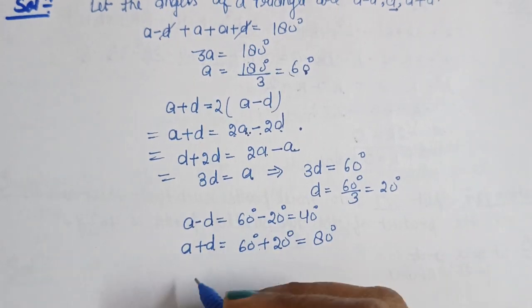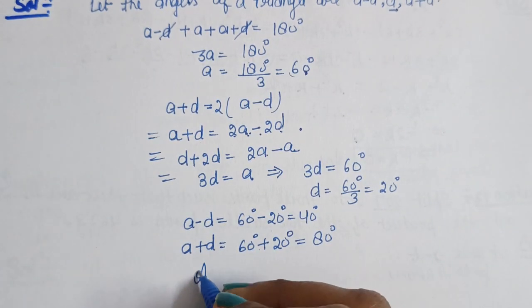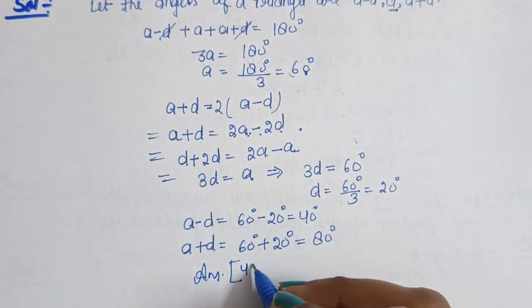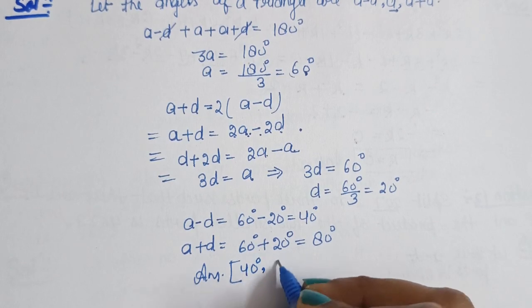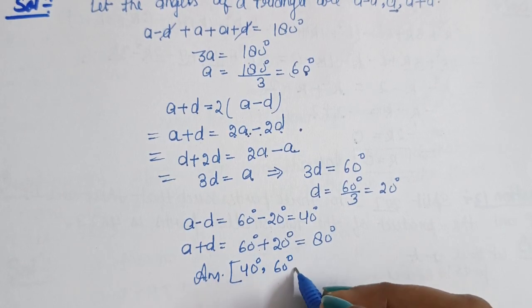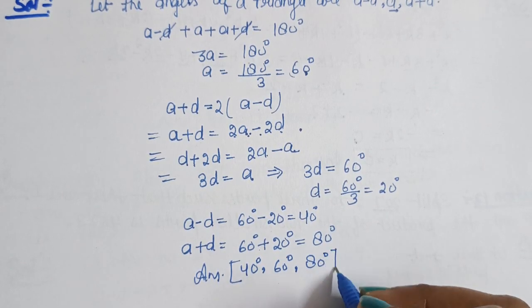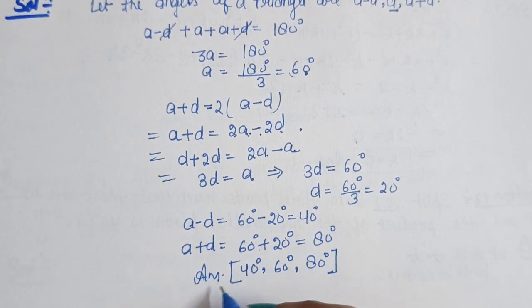So here we have the three angles of the triangle: the first angle is 40°, the second is 60°, and the third is 80°. This is our answer for Question 13.